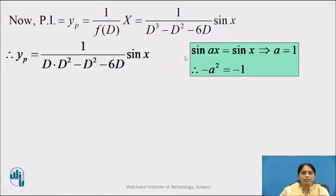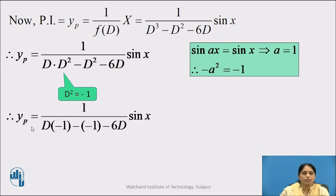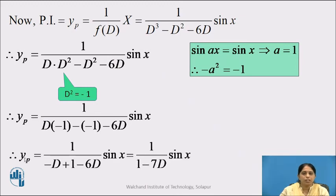Comparing sin x with sin ax, we get a = 1, so −a² = −1. Replacing D² by −1: yp = 1/(D(−1) − (−1) − 6D) · sin x = 1/(−D + 1 − 6D) · sin x = 1/(1 − 7D) · sin x.